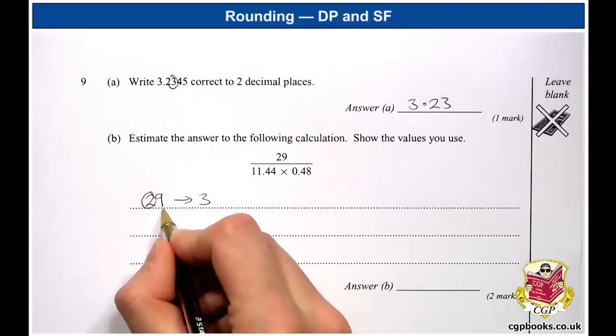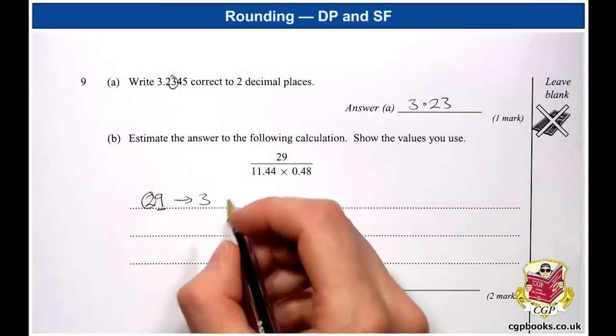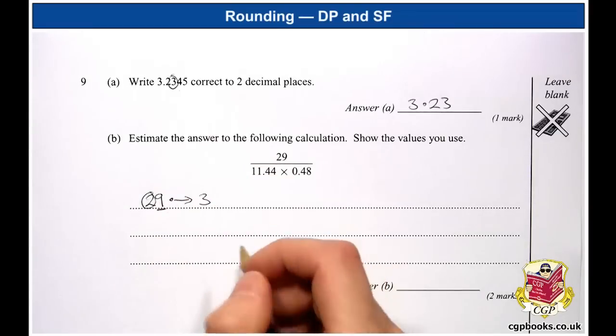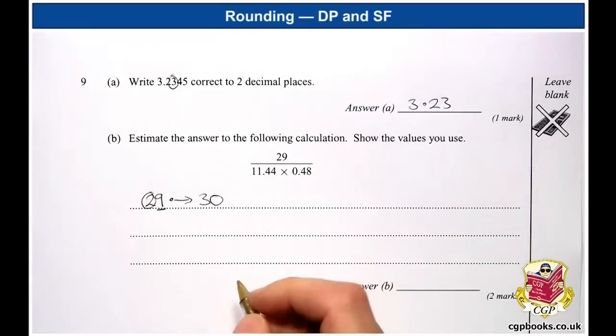But we've still got a gap here before the decimal point, if you imagine that going there. So we need to fill that in with a 0, and we get 30.